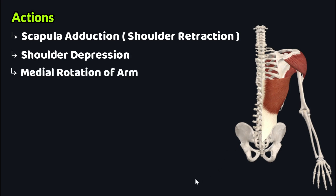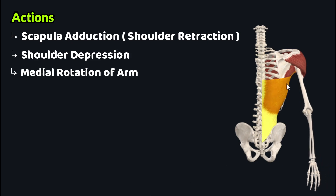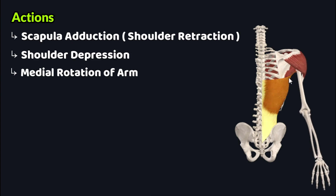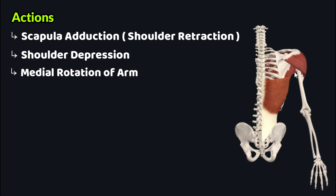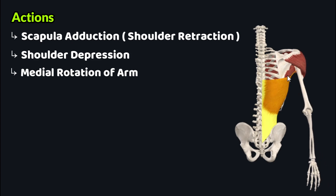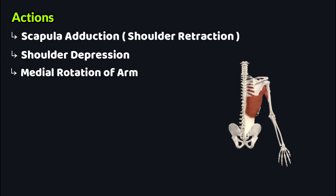When the latissimus dorsi muscle acts through its flat tendon of insertion, it medially rotates the arm. As you can see, when this muscle contracts it acts through its flat tendon of insertion on the proximal part of the humerus, and in this way medially rotates the arm.